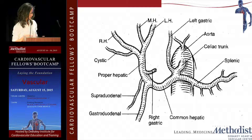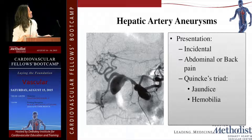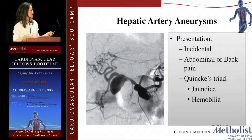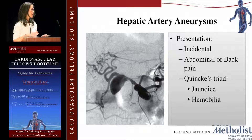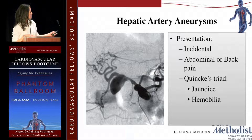There is Quincke's triad, which involves abdominal pain and right upper quadrant pain associated with common hepatic artery aneurysm that can bleed into the biliary system, causing hemobilia as well as jaundice from obstruction of the common bile duct. It's a very rare phenomenon, but it can happen, and this is the situation in which you would have to operate urgently.